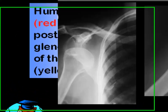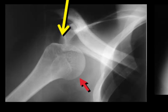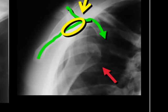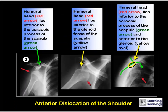In patient two, the humeral head (red arrow) lies inferior to the coracoid process of the scapula (green arrow). On another view, the humeral head lies inferior to the glenoid fossa (yellow arrow). On the Y view, the humeral head lies inferior to the coracoid, which is an anterior structure, and anterior to the glenoid (yellow ellipse). This is an example of an anterior dislocation of the shoulder.